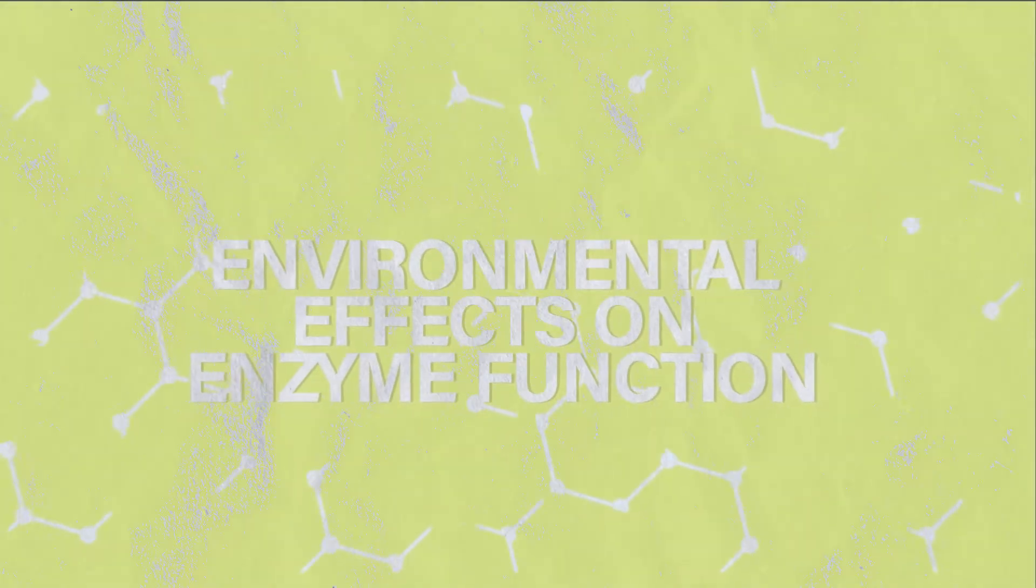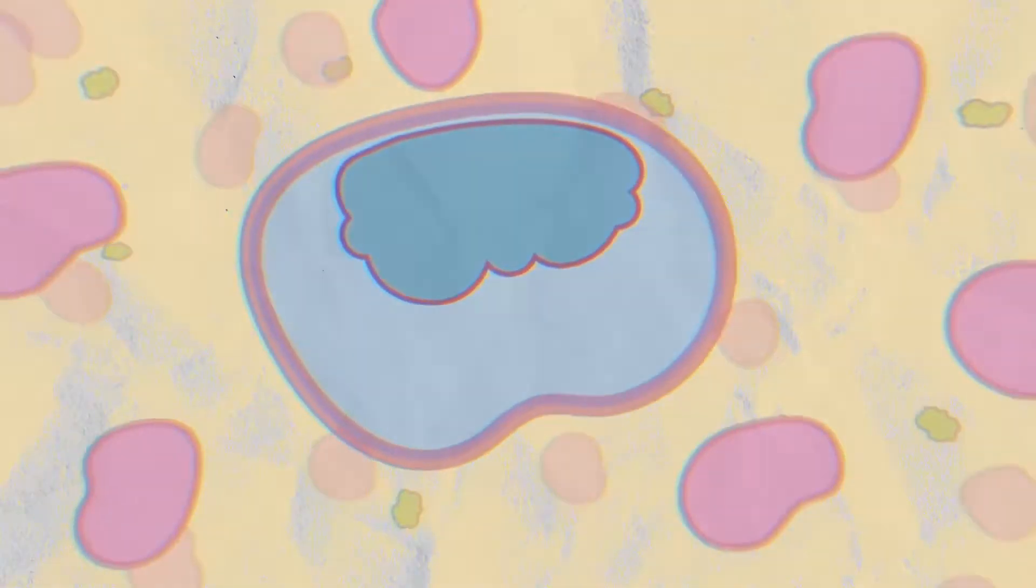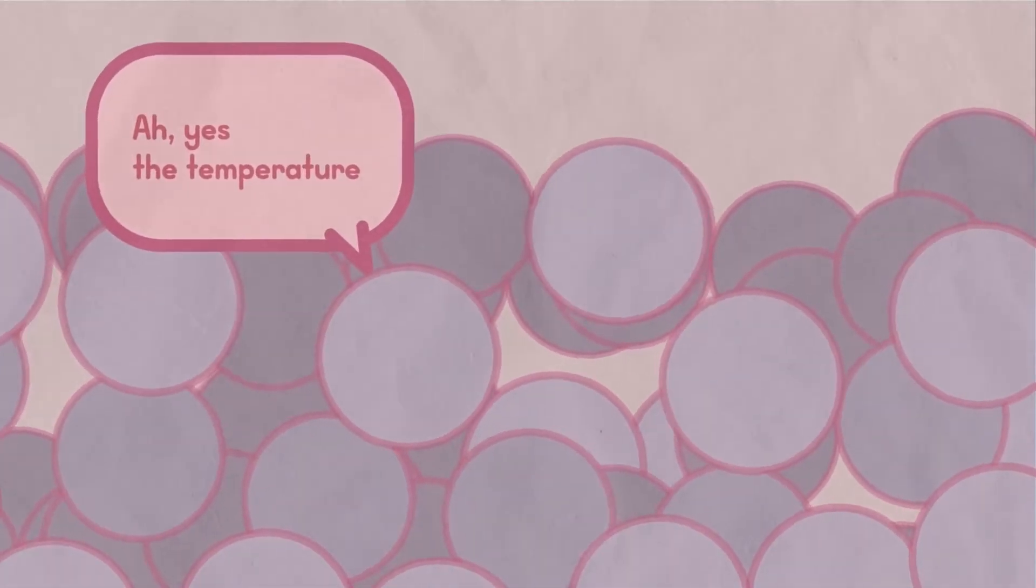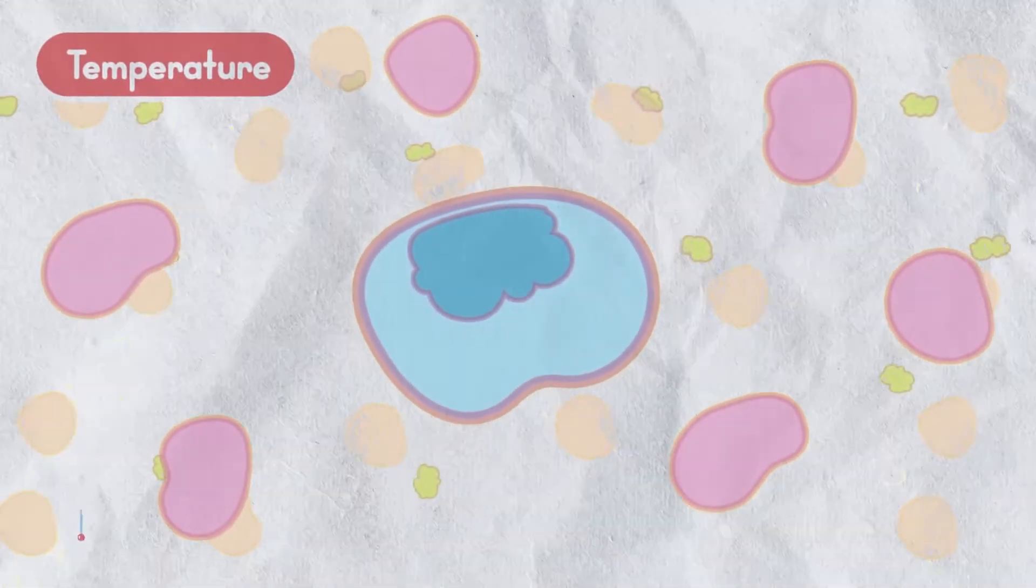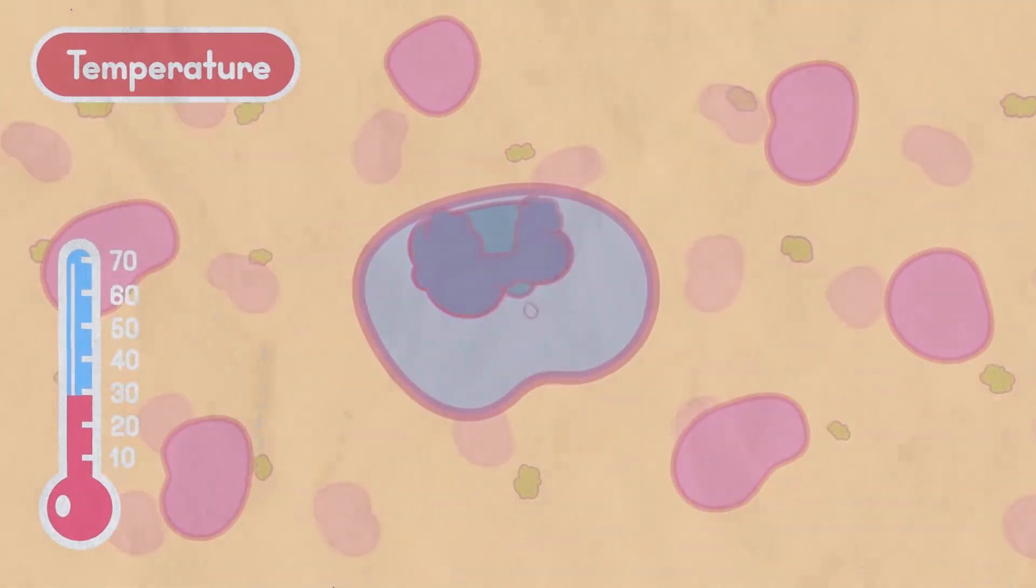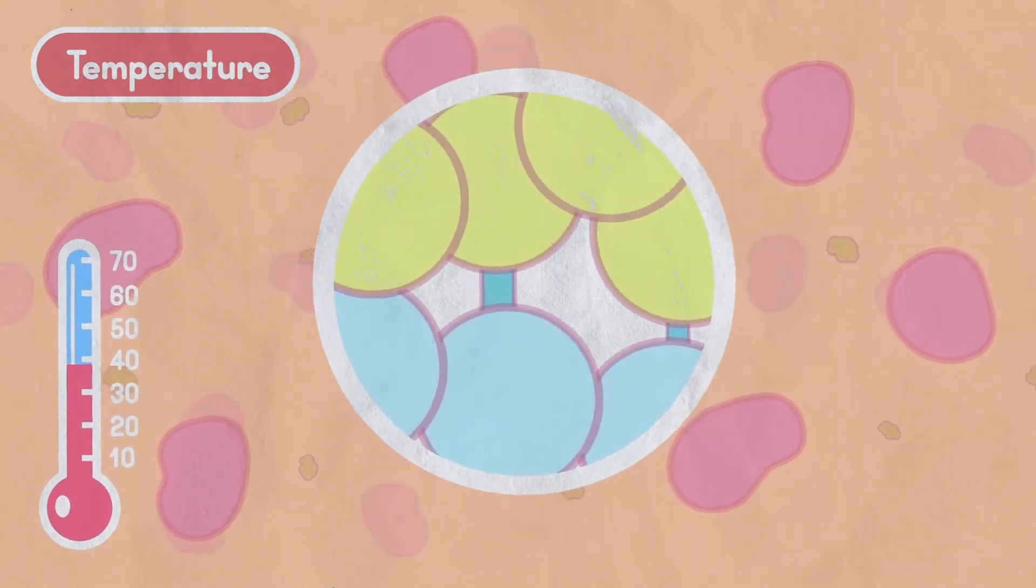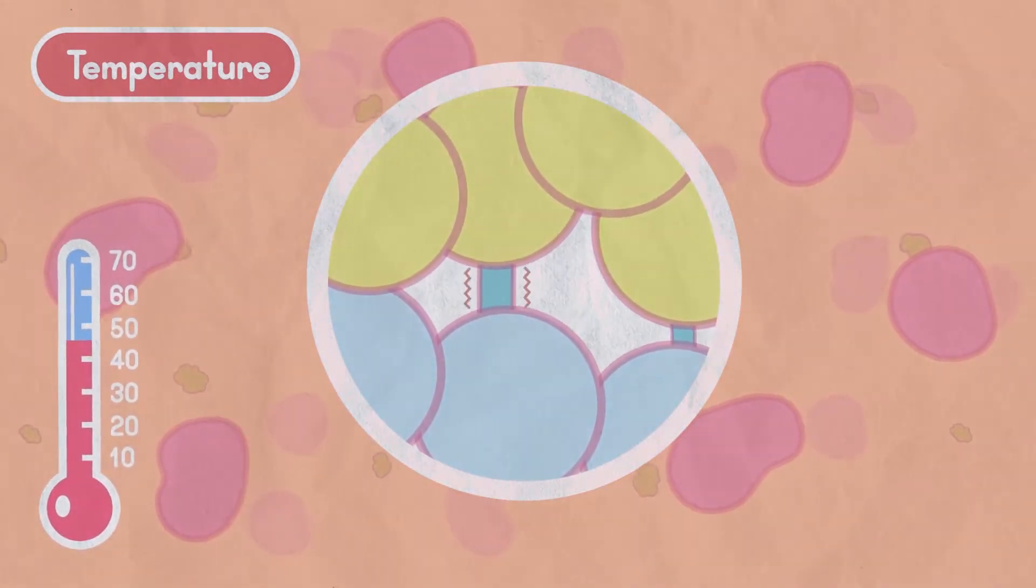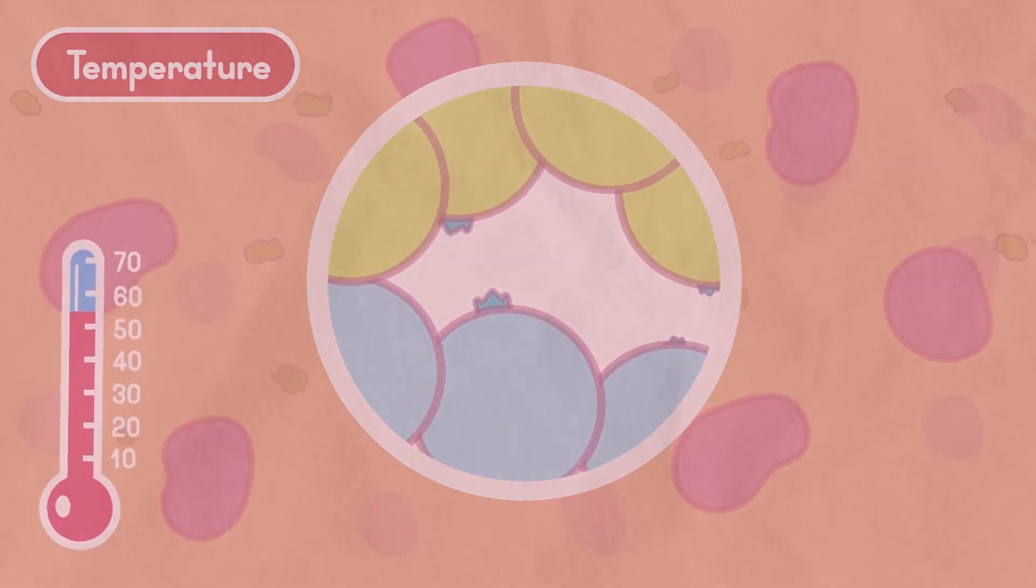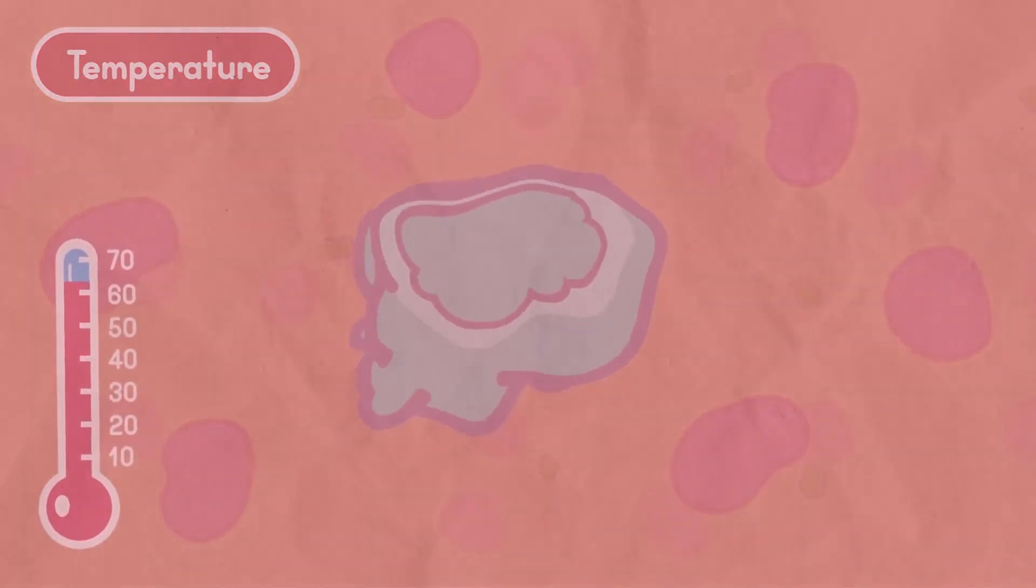Environmental effects on enzyme function. Active sites are very sensitive. They sense even the slightest change in the environment and respond accordingly. Some of the factors that affect the active site and consequently enzyme function include temperature. The suitable temperature for enzymes to function properly is 37 degrees Celsius. Increasing or decreasing the temperature above 37 affects chemical bonds in the active site making them less suited to bind substrates. Higher temperatures denature enzymes.